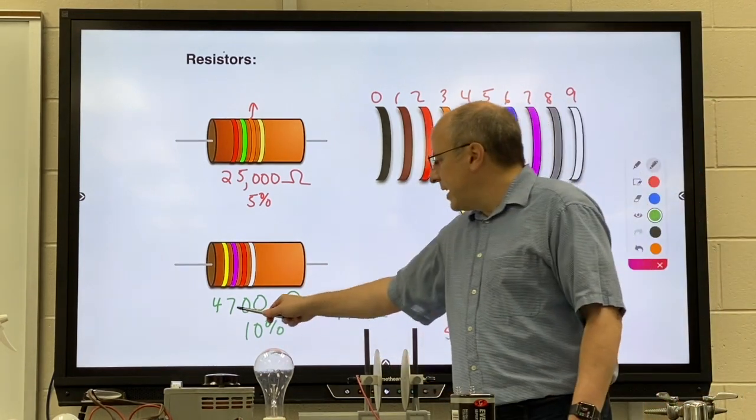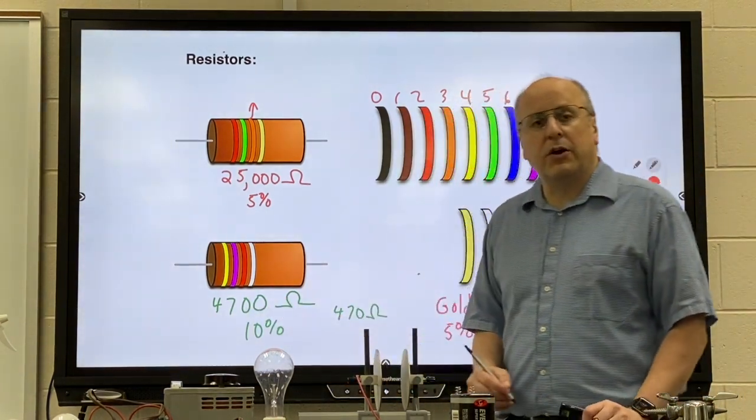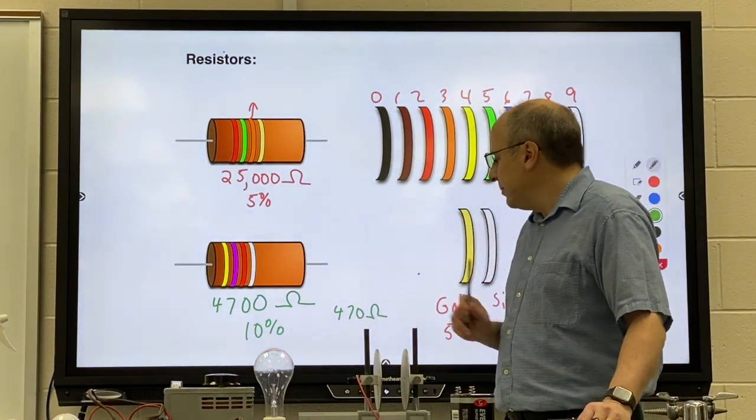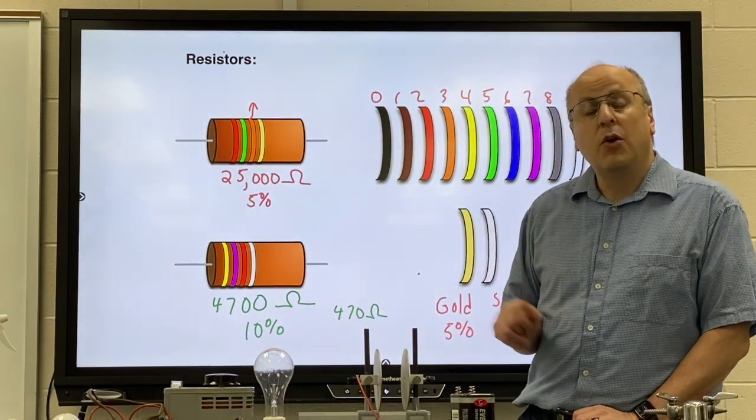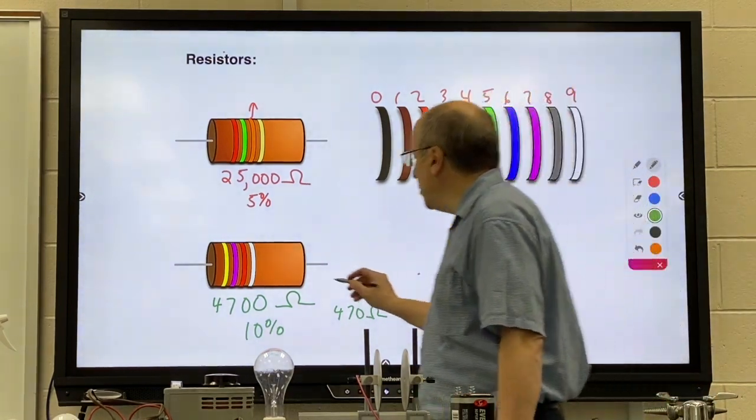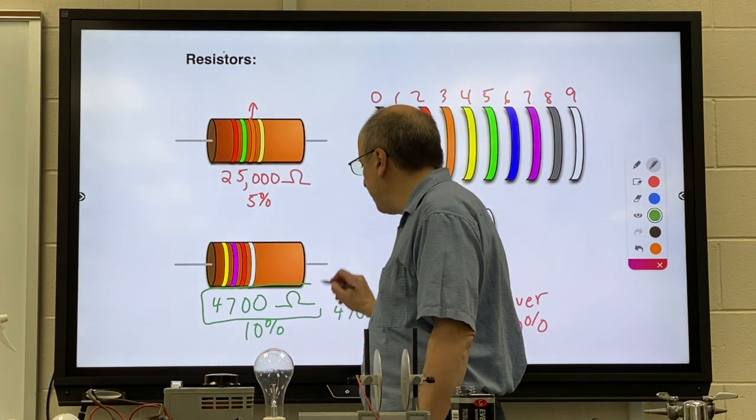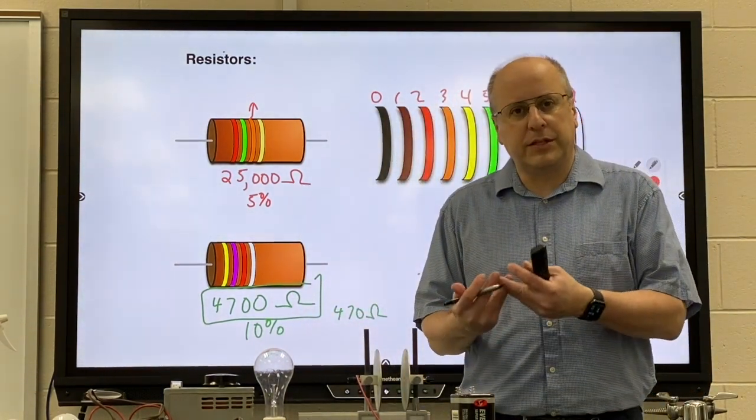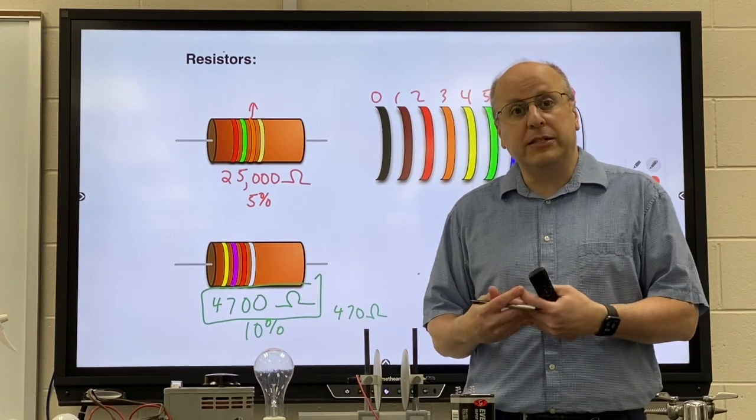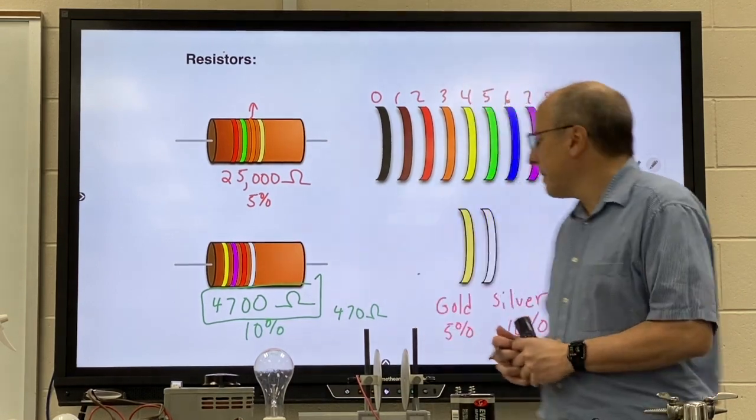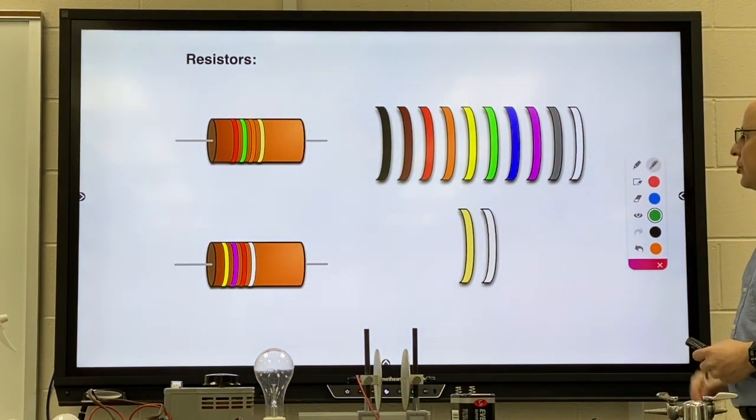So 4700 is the middle of the range that it could be in. But it might be higher by 470 or lower by 470. Most times it's good enough that you're able to just get this. I will not be a stickler for the silver and the gold. But please know the gold are more precise, the silver less so. That is your resistor code.